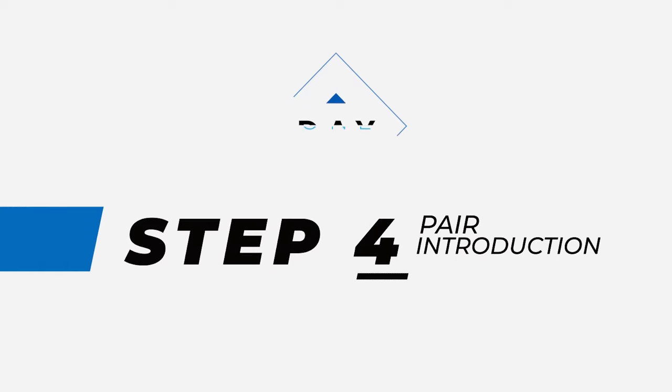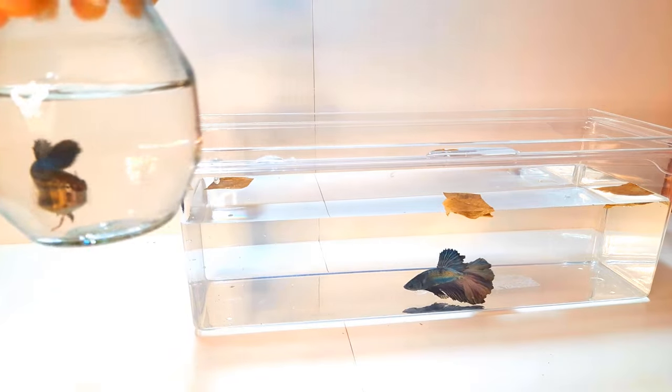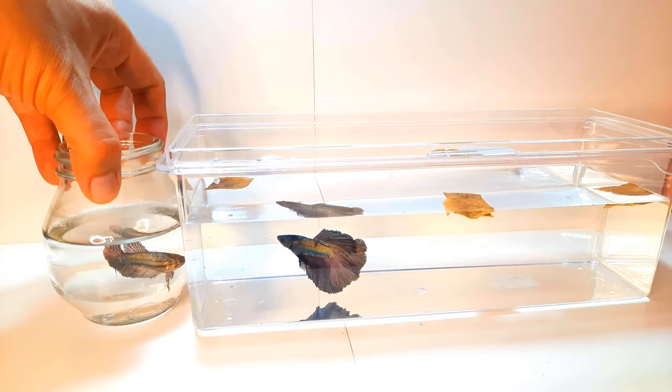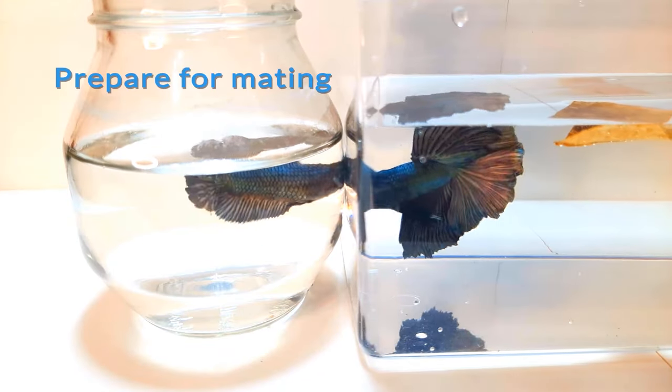Step 4. Day 1. Pair Introduction. Introduce the pair to each other by placing their tank side by side. This is so they can see each other. So they both can prepare for mating without prematurely fighting.